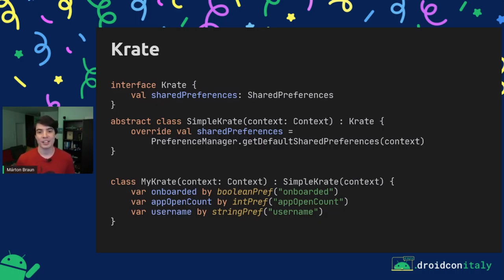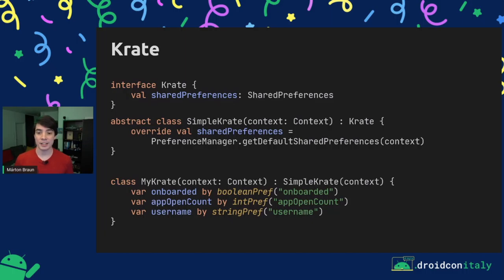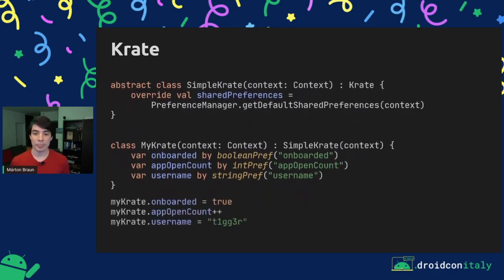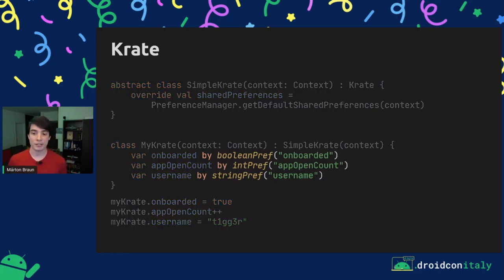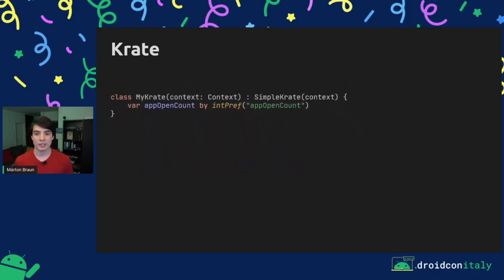This is what the use site looks like. You're extending SimpleCrate, which is the easiest way to implement Crate. Then you're adding each property that you want to store and delegating each of them into functions provided by the Crate library. This gives you this kind of syntax when you actually go to use your Crate — you just read and write values of properties the same way as you would if these were real Boolean or int values, but under the hood these are all going to be stored in shared preferences.